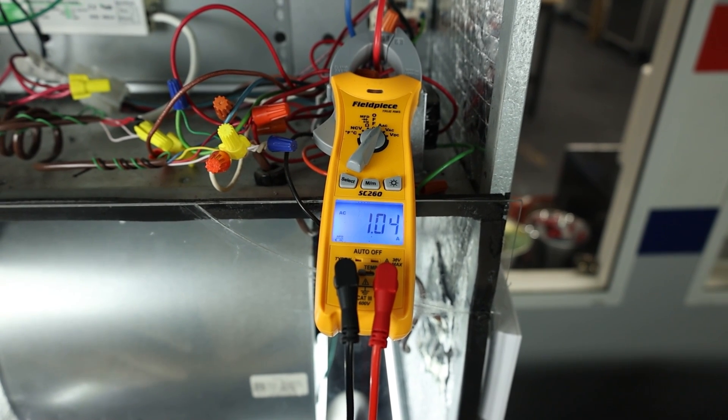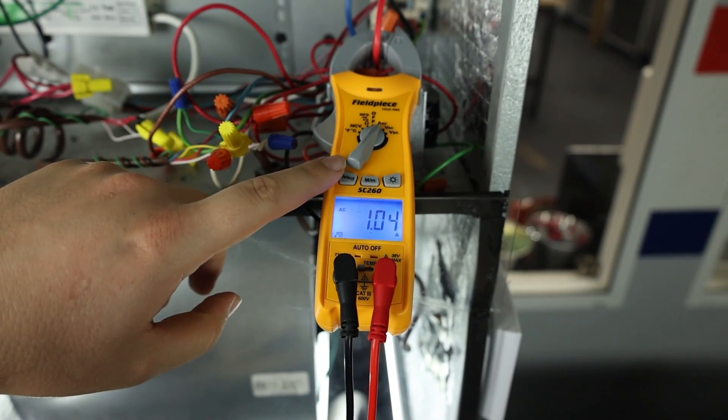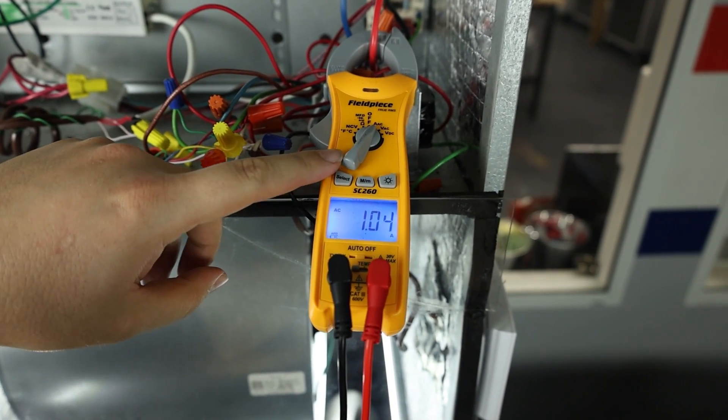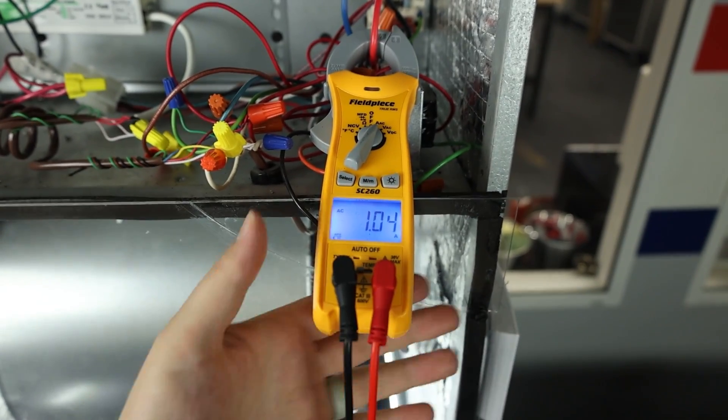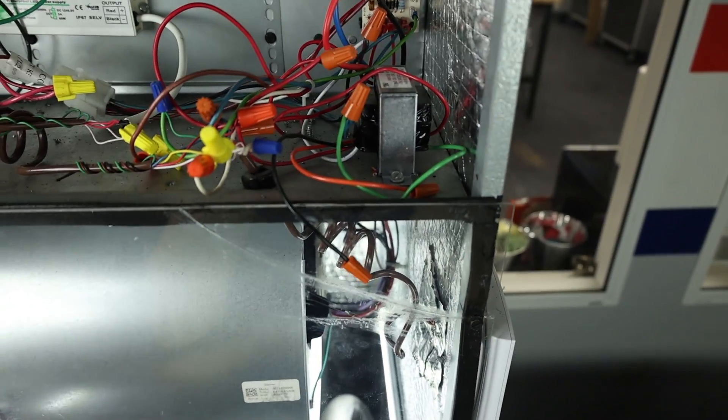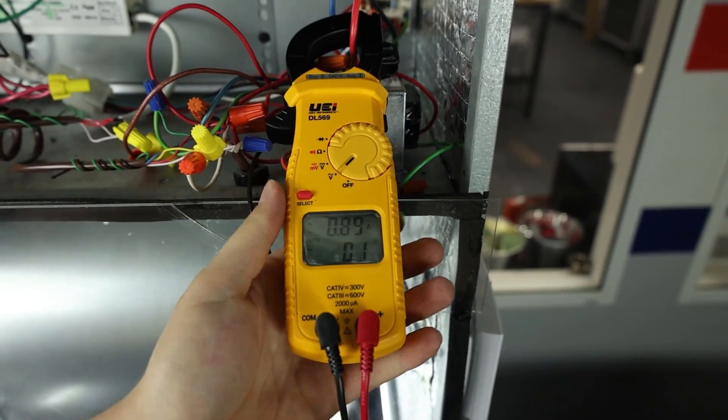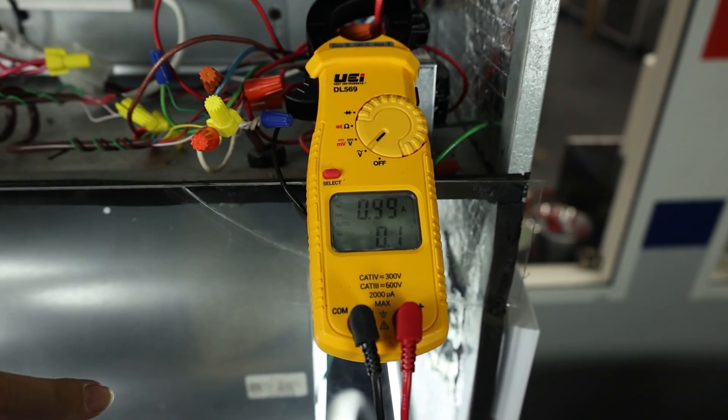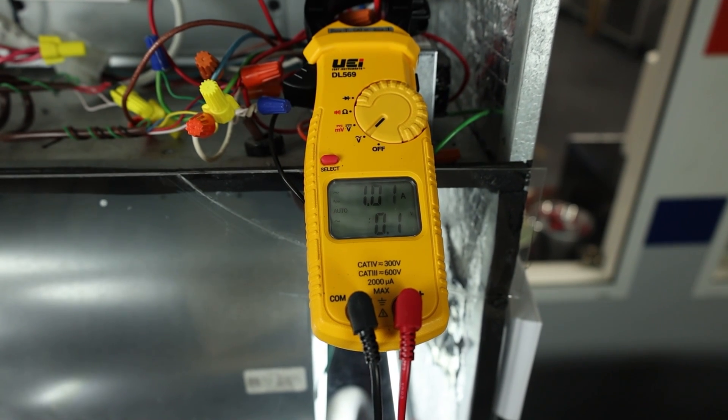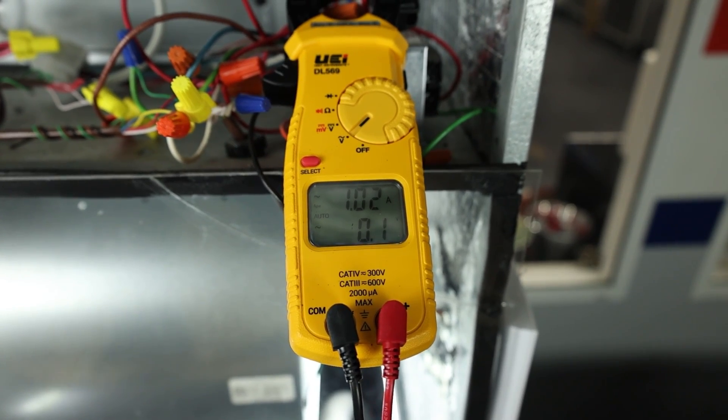We've come out here to our split system to measure amps on a blower motor. First, I've got the Fieldpiece set to AAC, which is the setting to measure amps. I'm measuring about 1.4 amps here with this meter. We can switch it out with the UEI one. As long as the UEI meter is set to any of the settings, it will measure amps at the top of the screen there. We're reading about 1.2 amps as well. That's how to measure amps with these two meters.